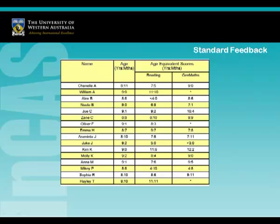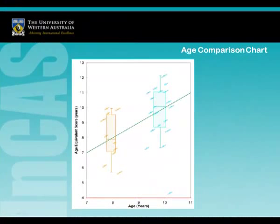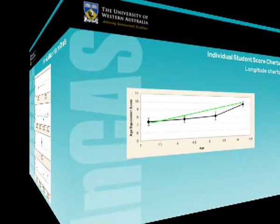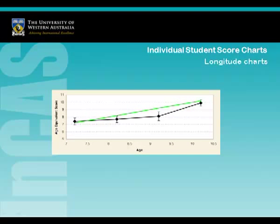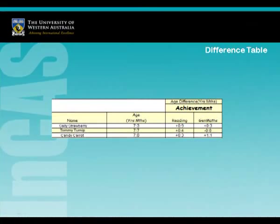Standard feedback outlines the student's actual age and age equivalent scores in all the components assessed. The age comparison chart is a box and whisker plot showing the spread of ability in a class, year or school. The individual score charts highlight areas of strength and potential growth for each student on each component. The individual longitudinal charts show a student's growth over time for each component. The difference tables outline the difference in years and months between a student's actual age and their age equivalent score.